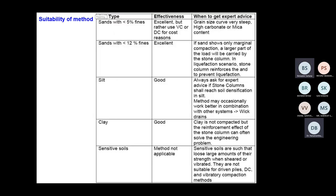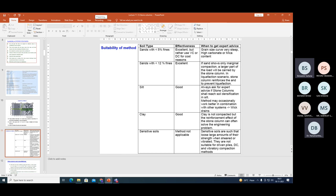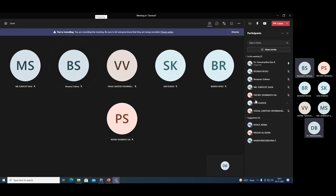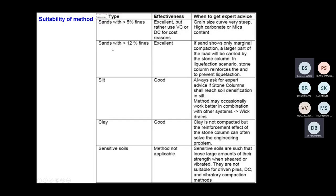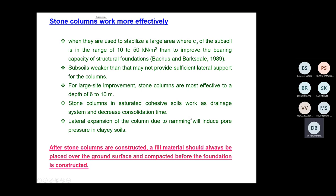Other guidelines on the suitability of the method: sands with less than 5% fines — stone columns work excellently; sands with less than 12% fines — also excellent; silts — good; clays — good; but sensitive soils — may not be suitable. This guideline was for stone columns specifically.